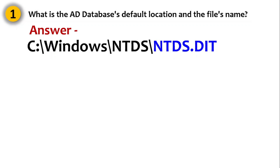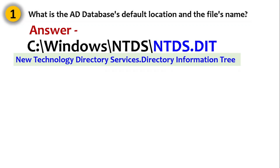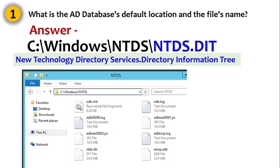This ntds.dit has a full form: New Technology Directory Services dot Directory Information Tree — that is ntds.dit. In the interview, you can also provide this full form, which will definitely give you an edge over other candidates. Here is a screenshot of the NTDS folder showing the ntds.dit file, which is our Active Directory database file, present on every domain controller.